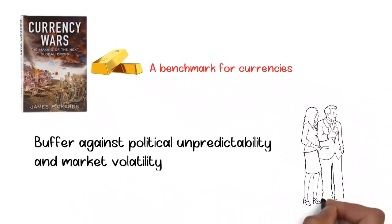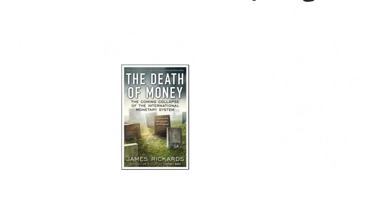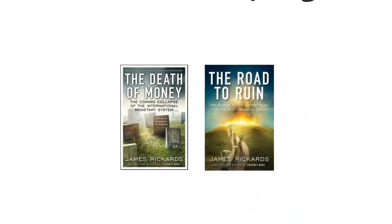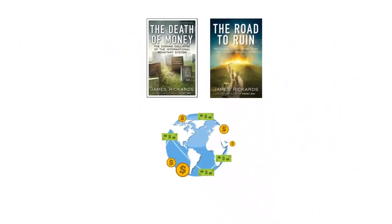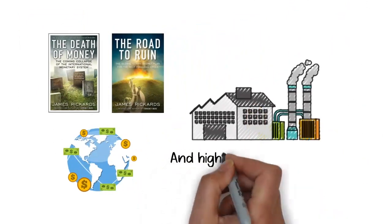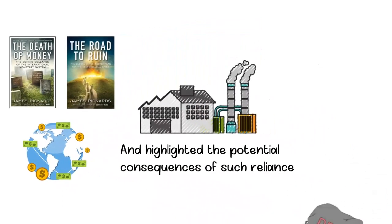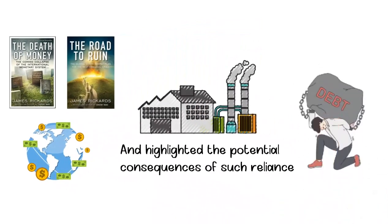He argues that global gold elites are stockpiling assets in anticipation for an impending financial disaster. Rickards' earlier works, such as The Death of Money, 2014, and The Road to Ruin, 2016, have been quite accurate in predicting the current world economy. He warned against over-dependence on Middle Eastern oil producers and highlighted the potential consequences of such reliance. He also expressed concerns about the unsustainable debt levels and the risks they pose to the global financial system.